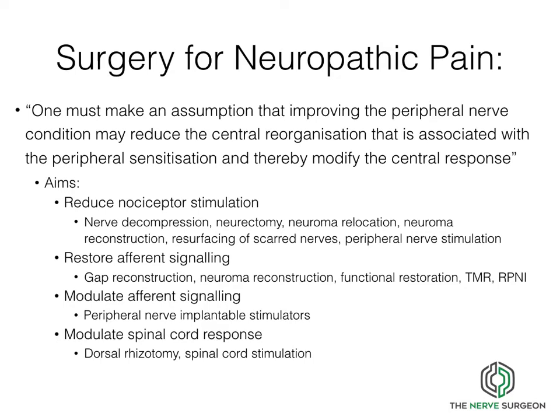This can be done in a number of ways. It's possible to reduce nociceptive stimulation through decompression of nerves, neurectomy, relocating neuromas, neuroma excision and reconstruction, resurfacing of a scarred nerve, or peripheral nerve stimulation. It's possible to restore afferent signalling through reconstruction of a nerve gap — particularly following neuroma excision — functional restoration via tendon transfers or nerve transfers, and the use of targeted muscle reinnervation and reconstructive peripheral nerve interfaces. It's also possible to modulate the afferent signalling pathway using implantable stimulators, and to modify the spinal cord response via dorsal rhizotomy and spinal cord stimulation.